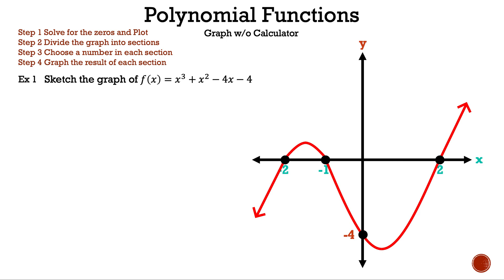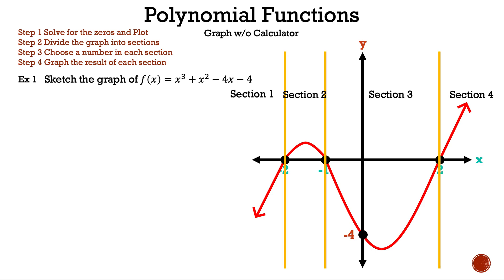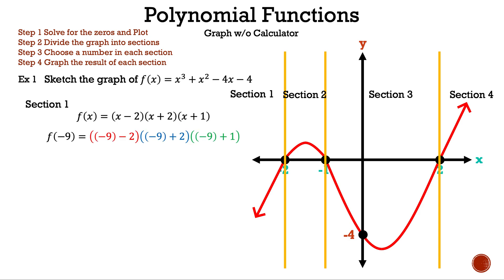If we can't remember the charts, we can divide the graph into sections using the x-intercepts. For section 1, we pick -9 and substitute into the factored form: (-9 - 2) is negative, (-9 + 2) is negative, and (-9 + 1) is negative. Negative times negative times negative gives a negative result, which means section 1 will be below the x-axis.